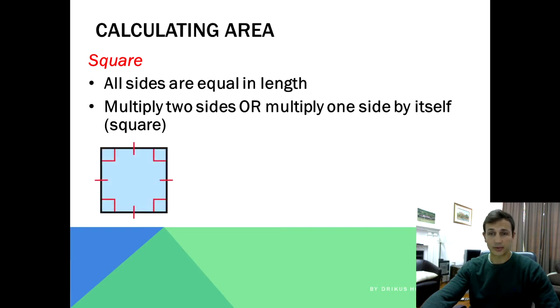So once again we have our square here. If it has a length of 3 centimeters for each side, to work out the area it's side times side which is side squared. 3 squared gives you 9 centimeters squared. So there's an example of what your unit should look like: centimeters squared.